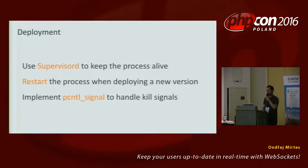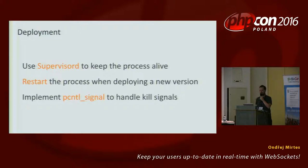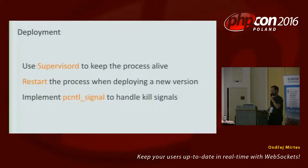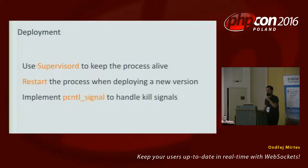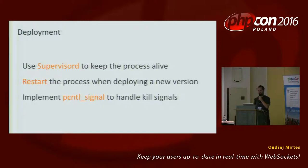When you have a process running on your server, you should do something about keeping it alive. Although Chris Bowden managed to run processes for two years, your process can crash often because of a memory limit, an exception, or anything that can go wrong. I like to use Supervisor for that. Supervisor is a utility written in Python that monitors and restarts processes — your processes are children of the supervisory process. You also shouldn't forget to restart your process when deploying code changes, because if you don't, you still have an old version running.